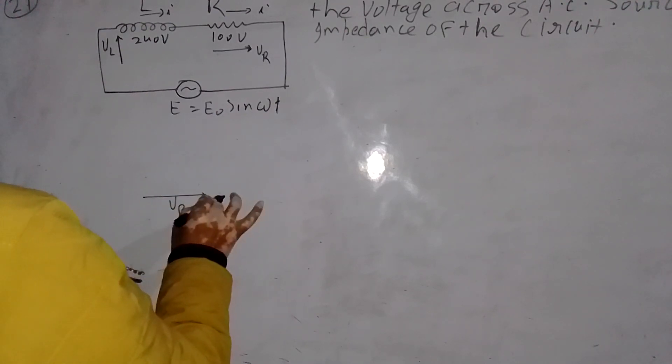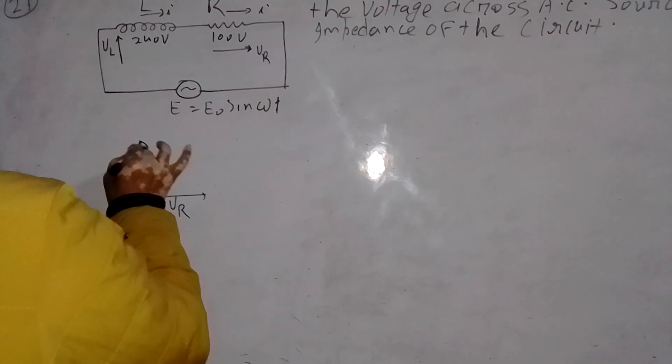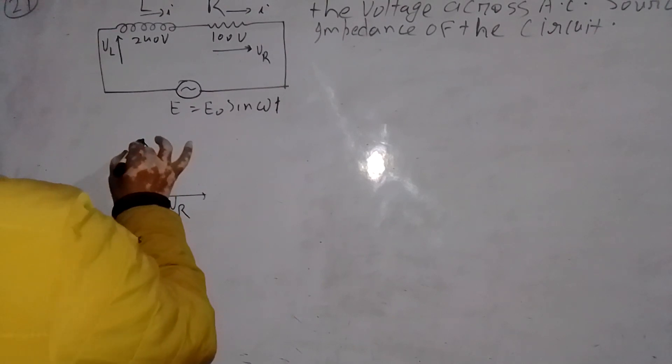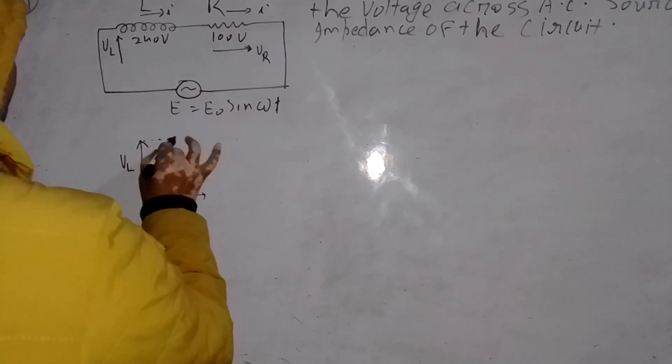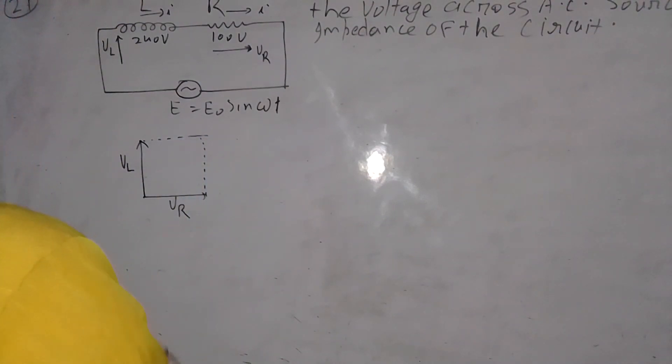If two vectors can be represented by two adjacent sides of a parallelogram, then the resultant is expressed by that diagonal which passes through the intersection of two vectors.